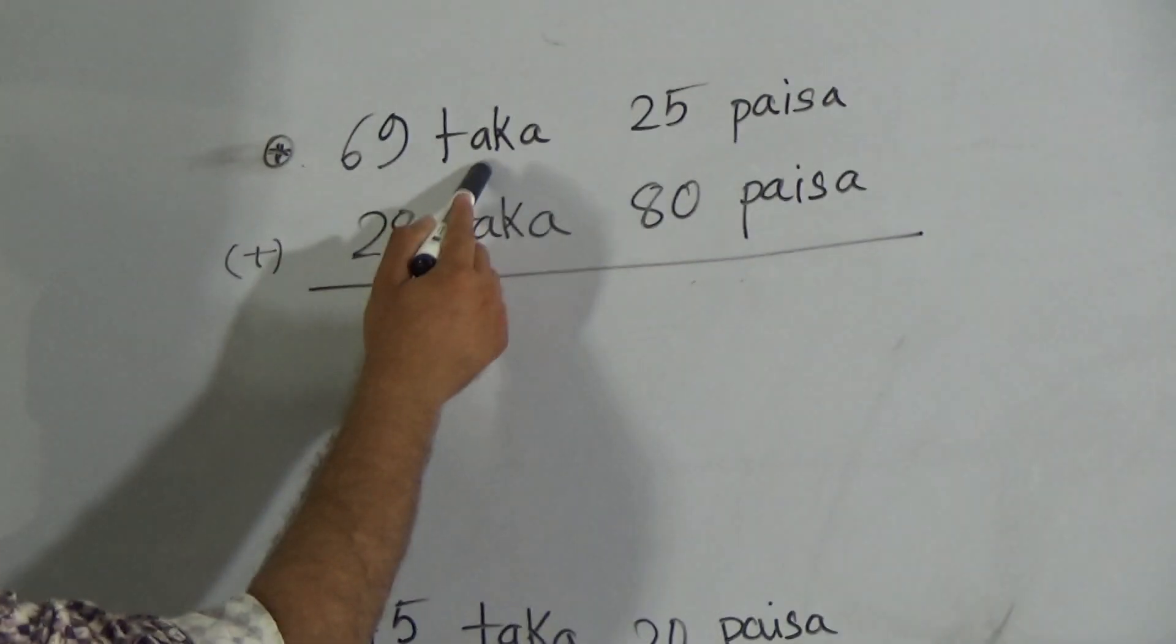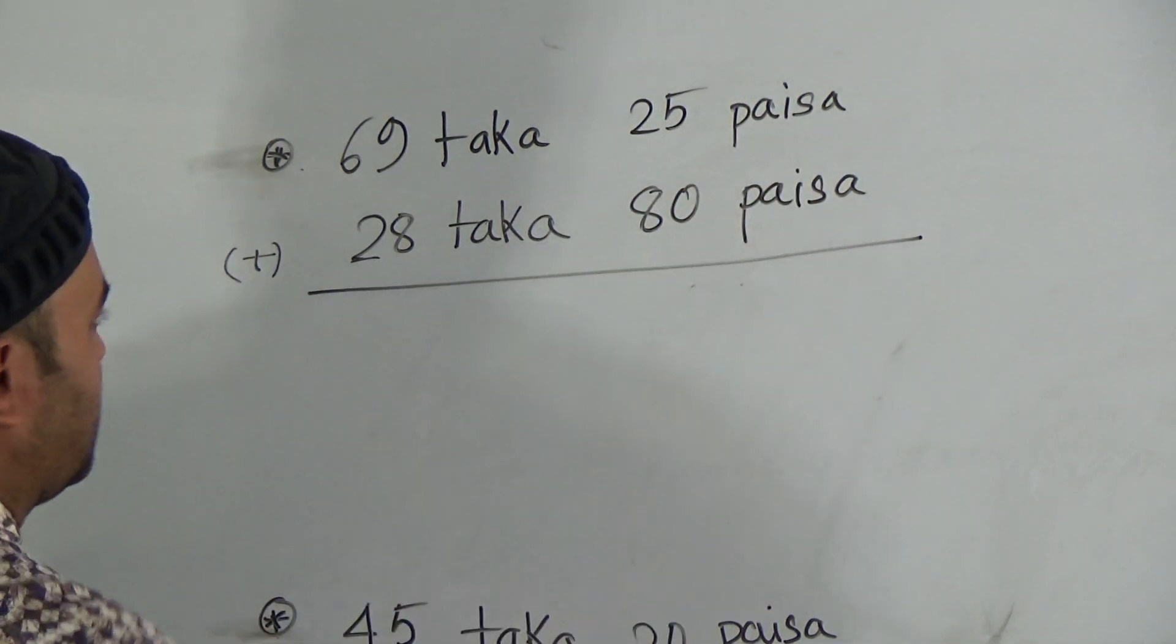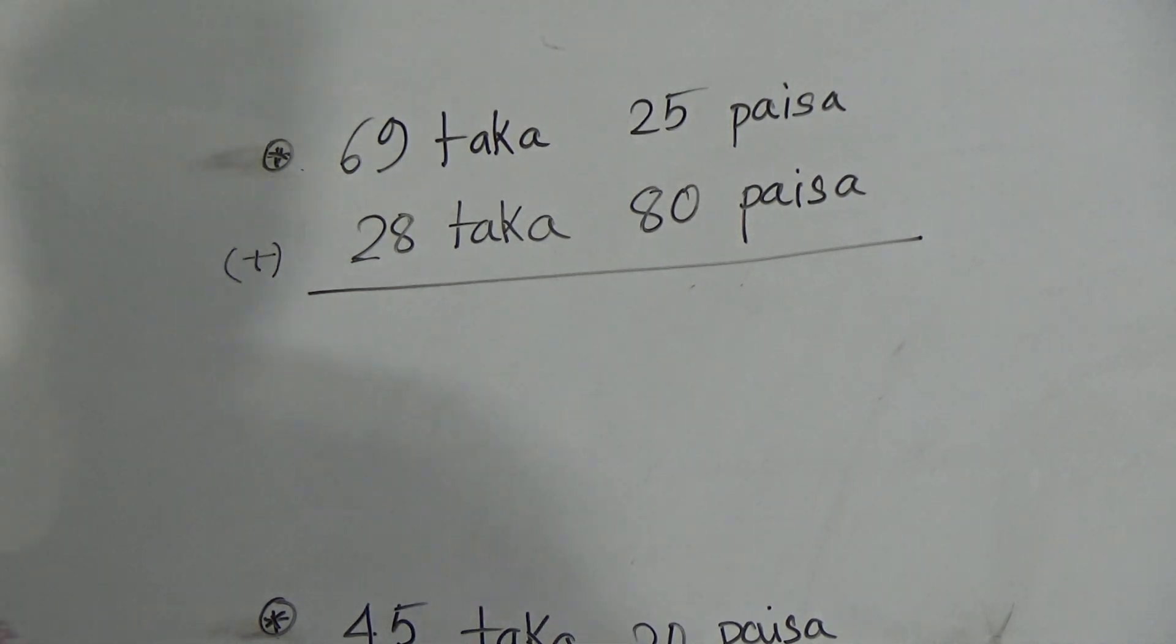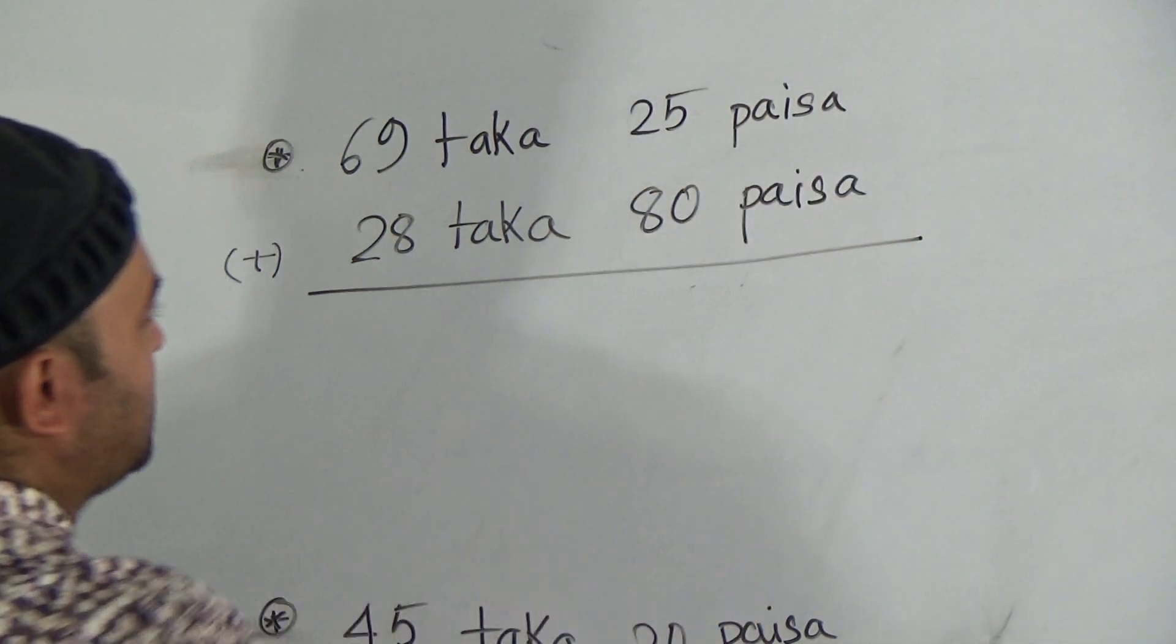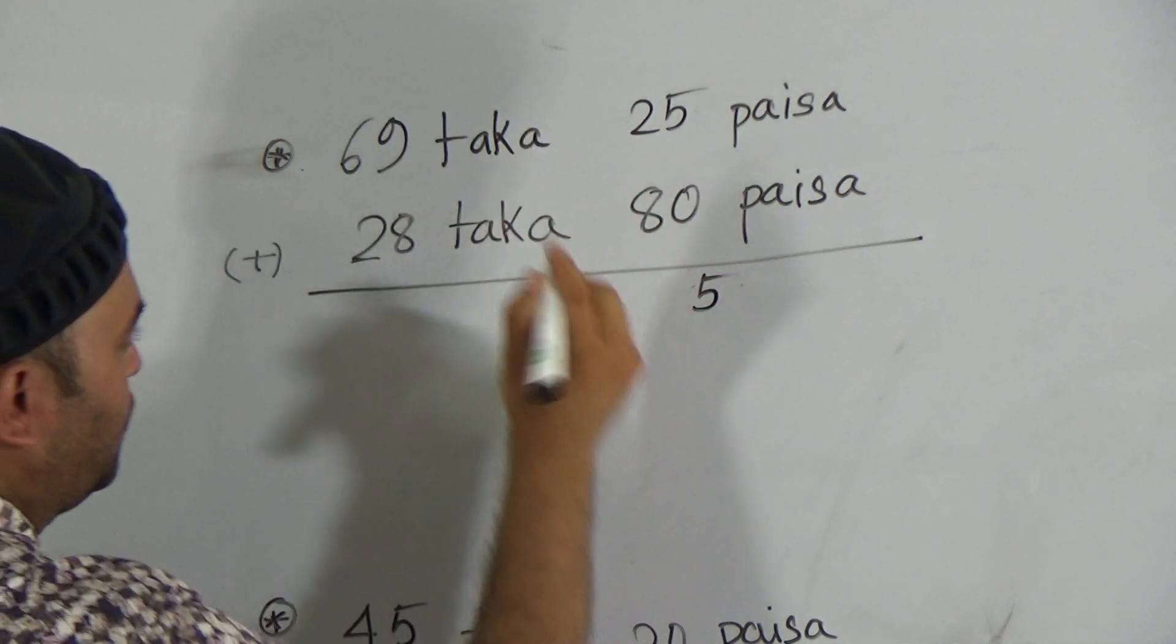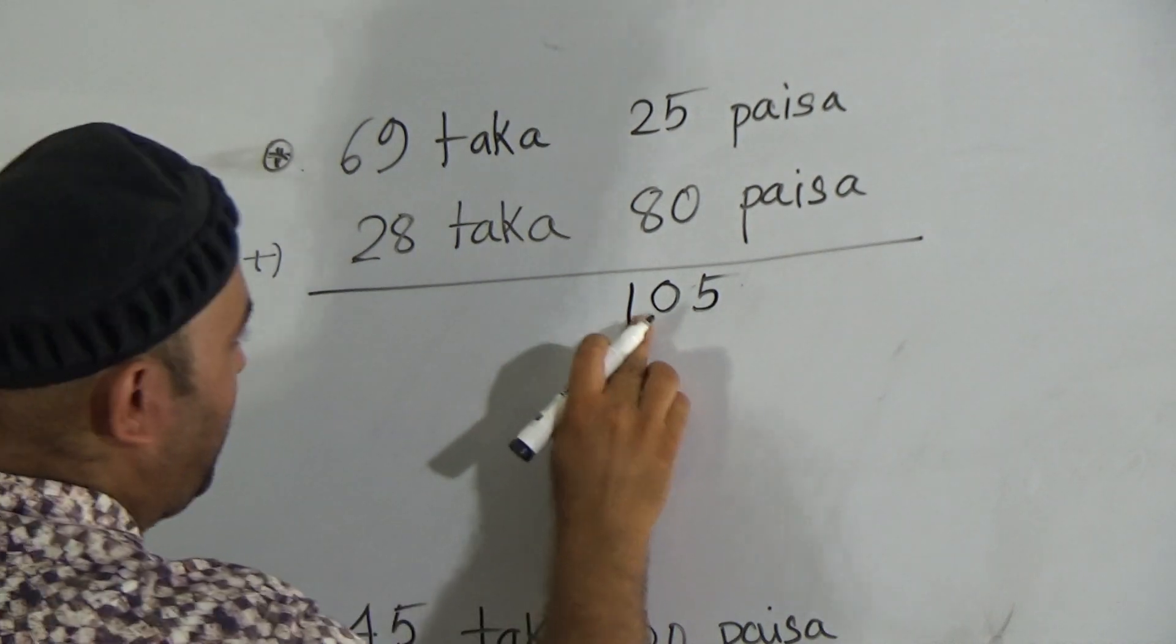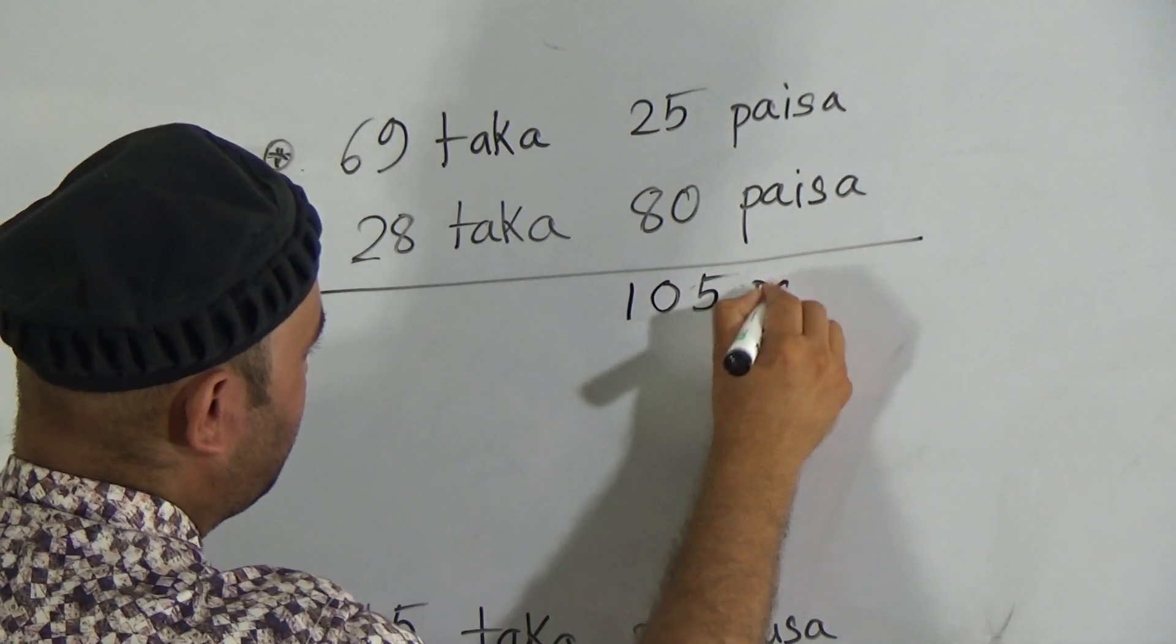Here is 69 taka 25 paisa plus 28 taka and 80 paisa. Now first of all we have to add paisa here. 5 and 8, 2 and 8 makes 10, so here it will be 105 paisa.